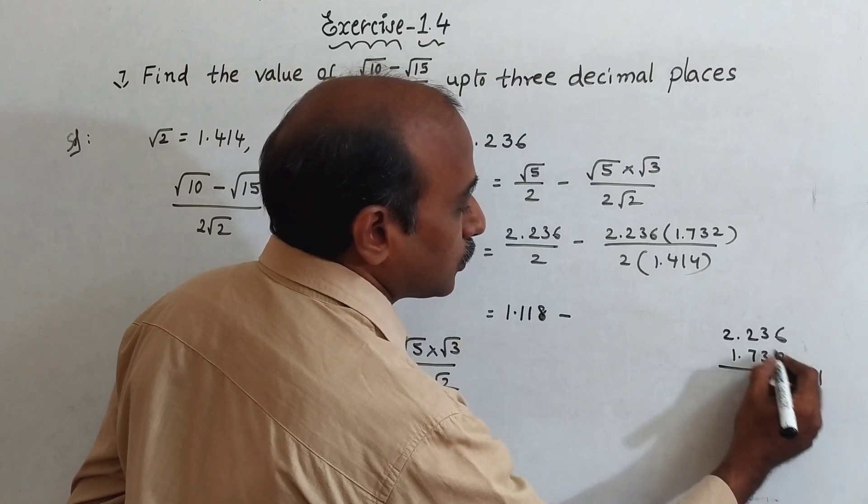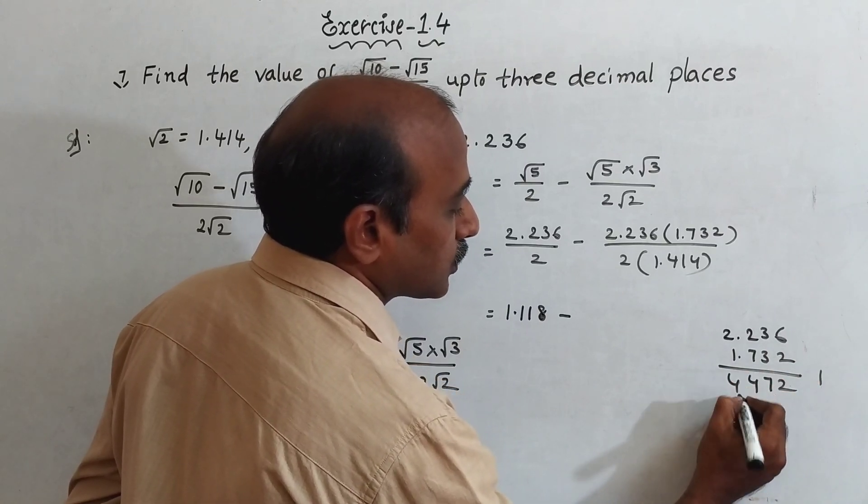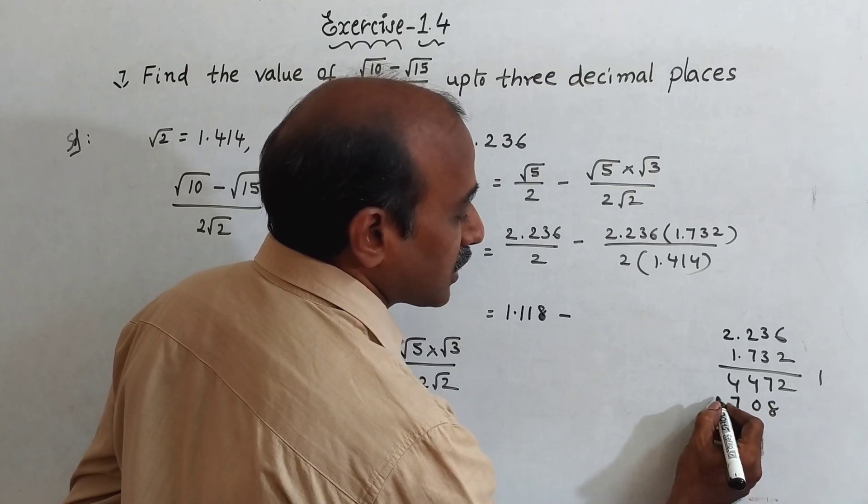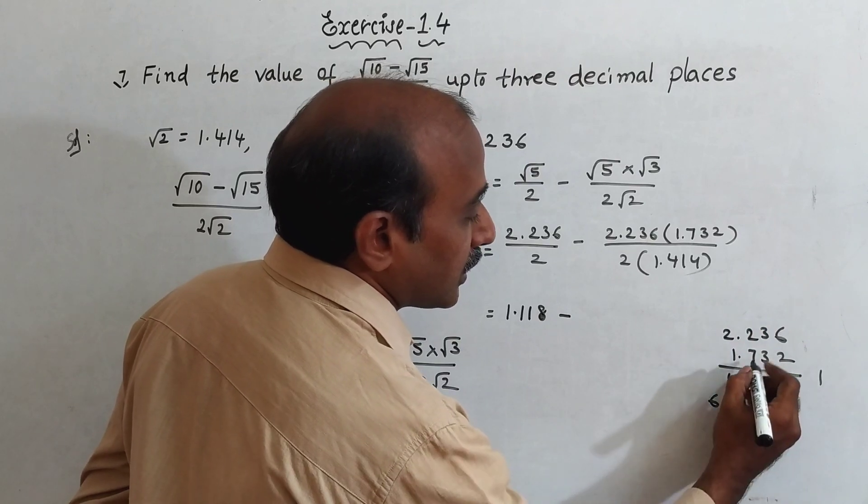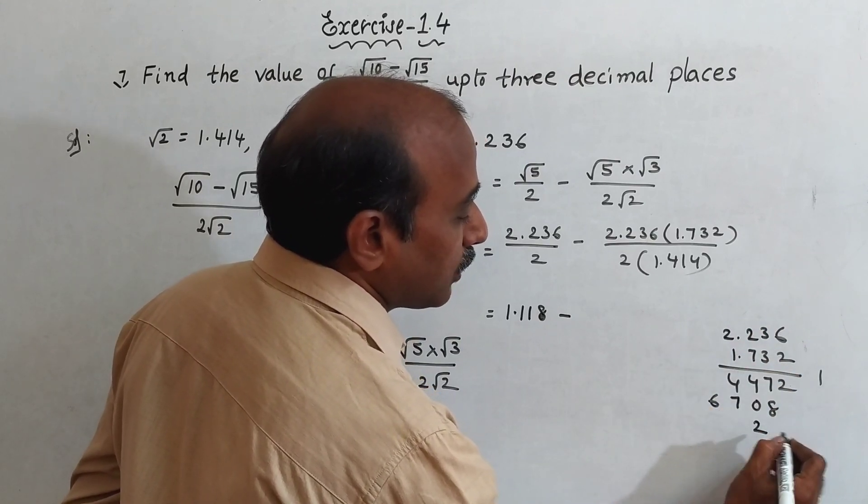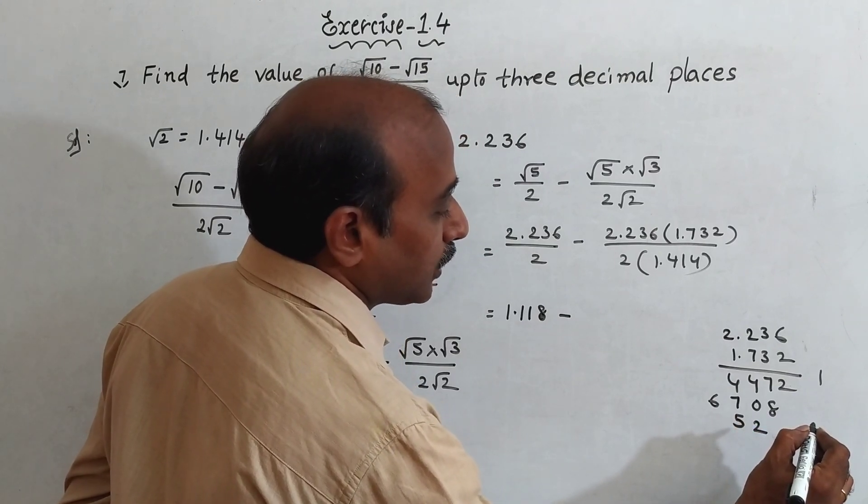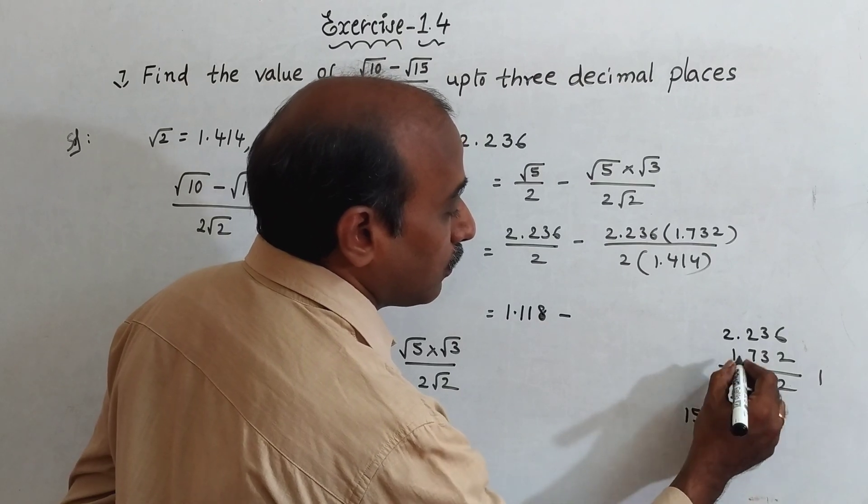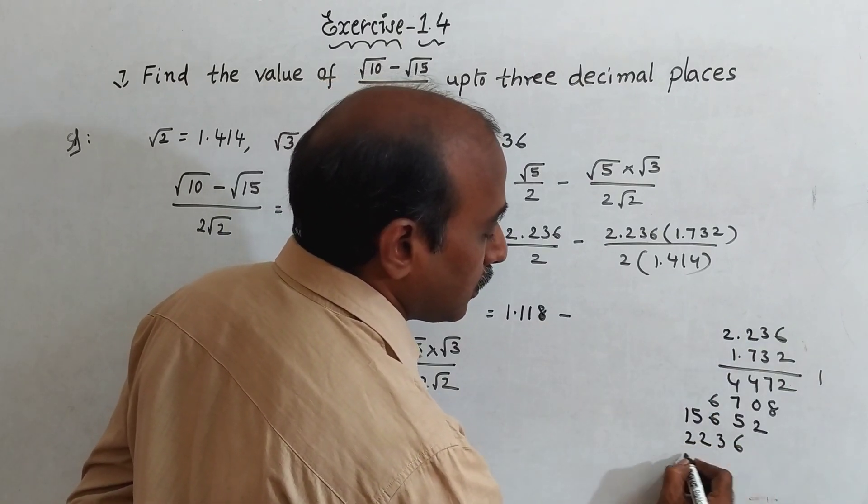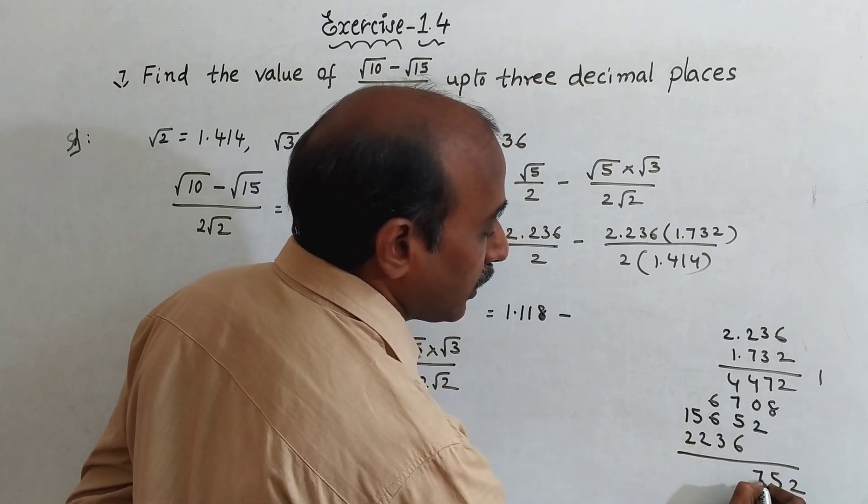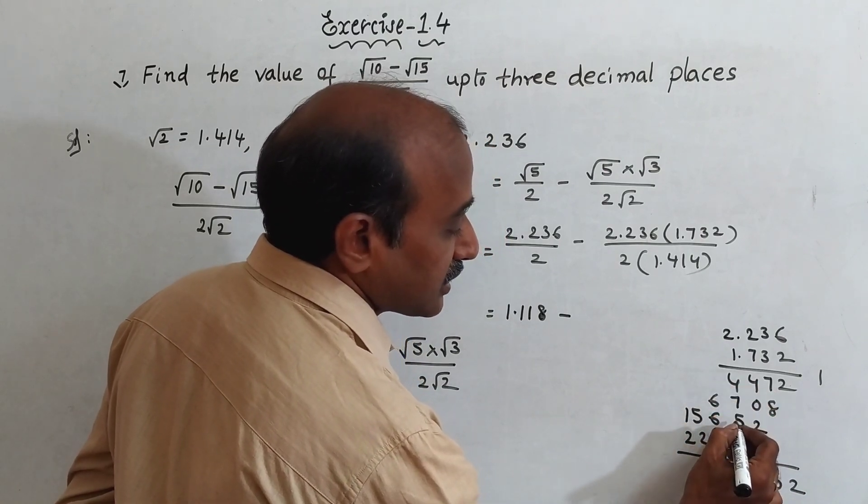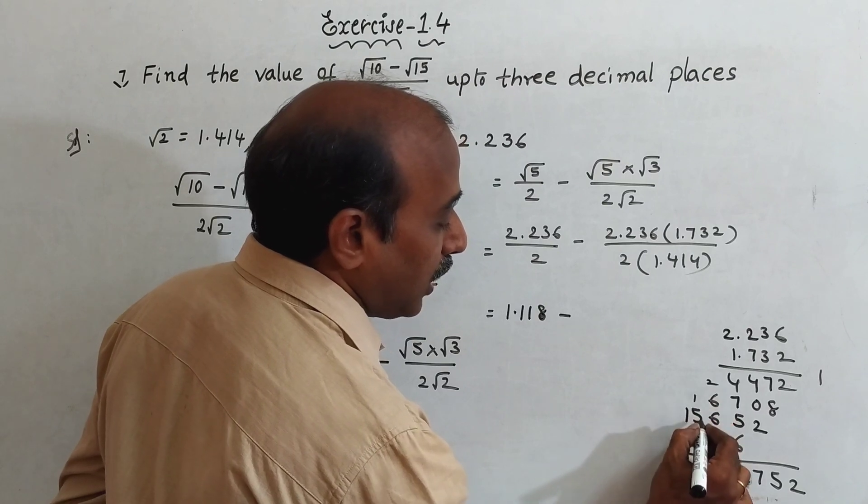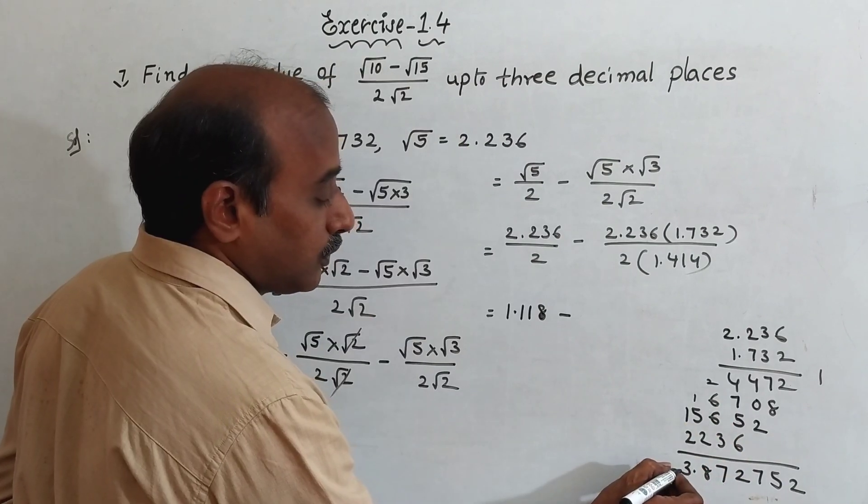Performing the multiplication 2.236 into 1.732 step by step: 2 times 6, 12; carry operations through each digit, adding intermediate products, resulting in 3.873. Up to 3 decimals, you have to take 3.873.